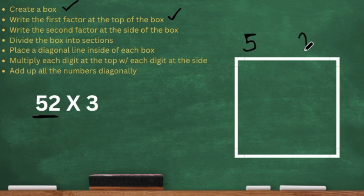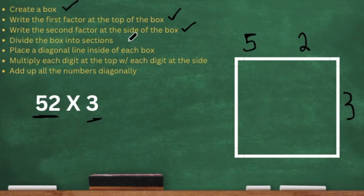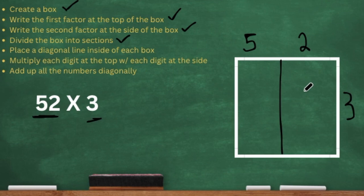I'm going to write 52 on top of the box, but I'm going to make sure I keep a space in between those two digits. Then it says write the second factor at the side of the box — the second factor is just the one digit, which is three. You just write it on the side. Then it says divide the box into sections. In order to do this, you have to draw that line going down vertically between both of those digits at the top. You don't need to draw a line going horizontally because we only have a one-digit number on the side.